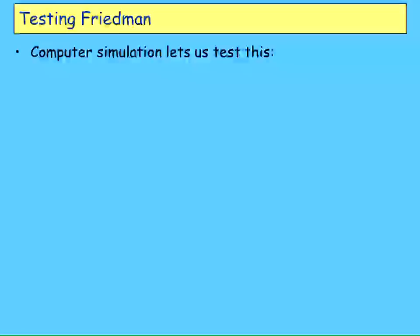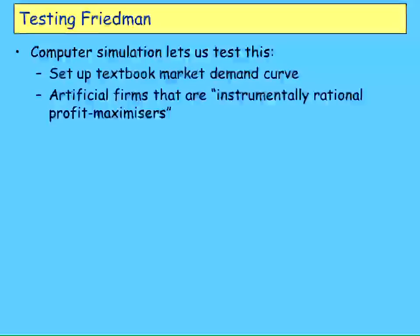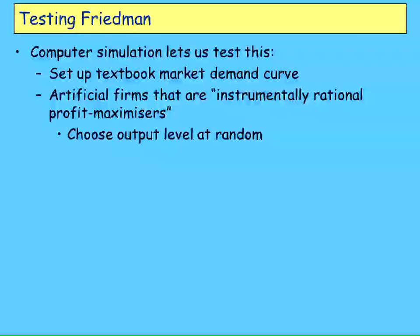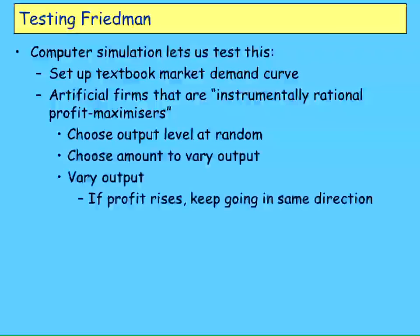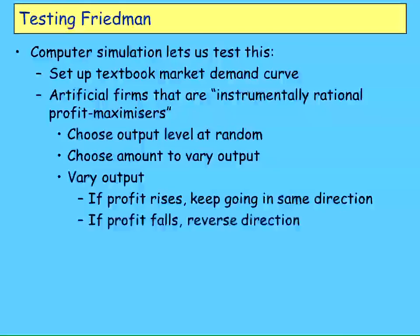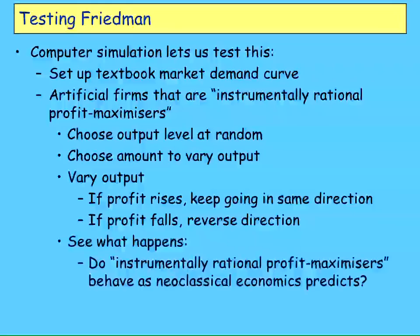1953 — a long time ago, and before we had computers. Now we've got computers, and we can actually test ideas like Friedman's by setting up a mathematical situation with a textbook market demand curve and textbook firm. But I'm taking Milton's case here — I'm not going to make these firms do calculus. I'm assuming the firms are what I call instrumentally rational profit maximizers. What they do is choose some output level at random, choose some amount to vary output by also at random, and vary their output. If they increase output by, say, 30 units and profit rises, then next production round they increase by another 30 units. If profit falls, they reduce production by 30 units. That's all they're doing — you can't get much dumber than that. No calculus; just suck it and see what maximizes profits.